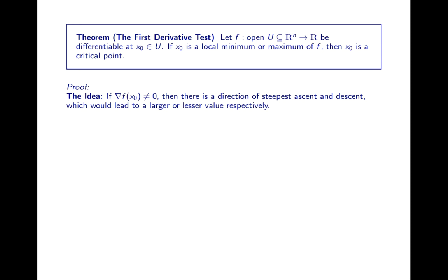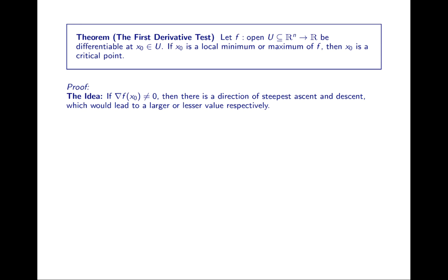The idea of the proof is quite simple. If the gradient is not zero, then there's a direction of steepest ascent or descent that leads to a larger or smaller value locally. The direction of steepest ascent is the unit vector pointing in the direction of the gradient, and the direction of steepest descent is the unit vector pointing in the direction of the negative gradient.